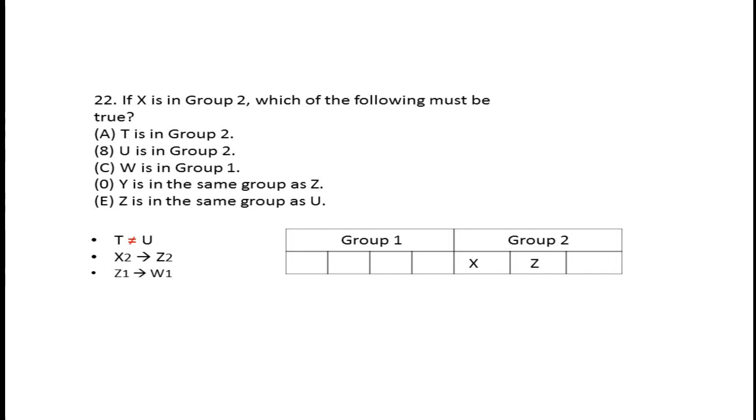T and U cannot be in the same group - they're in different groups. So if T is in Group 2 or U is in Group 2, then W must be in Group 1. This is not certain because either T or U can be in any group. So this is not a must. Option C is the answer.